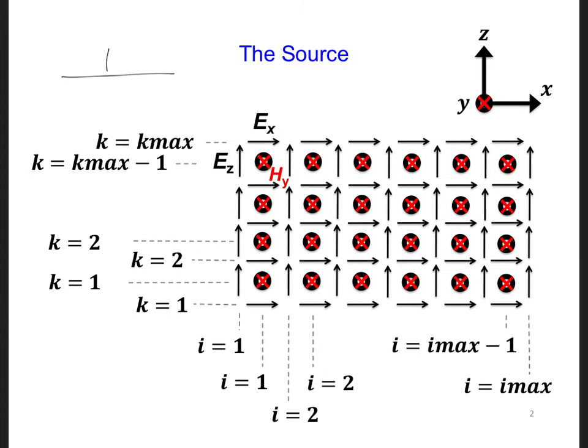But first, one of the best ways to make sure a two-dimensional FDTD code is working correctly is to check for symmetry in the propagating electromagnetic wave.